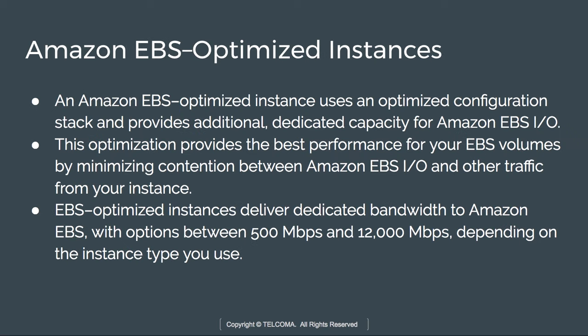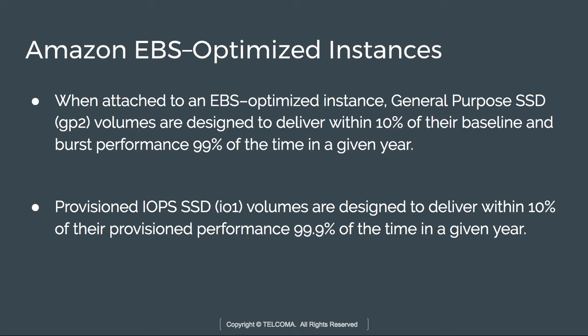Next we have EBS optimized instances. An Amazon EBS optimized instance uses an optimized configuration stack and provides additional capacity for input and output — that is why it is called an optimized instance. This optimization gives the best performance for your volume because it minimizes contention between EBS I/O and other traffic.